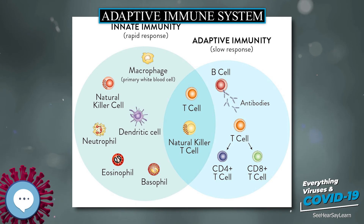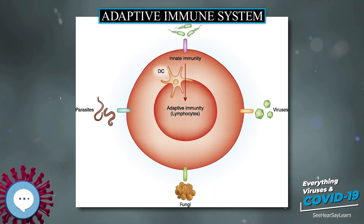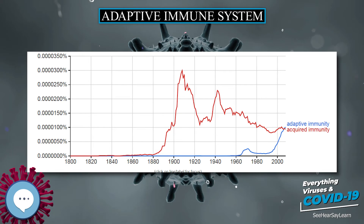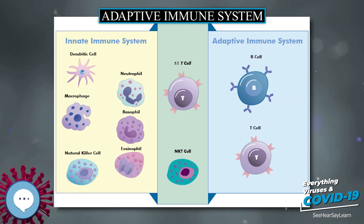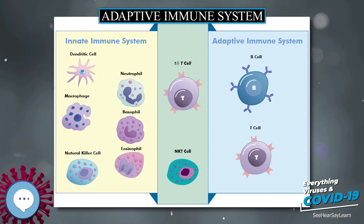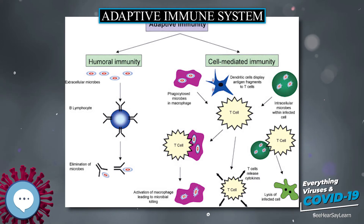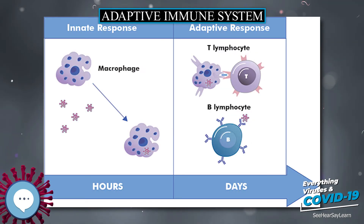These antibodies bind to antigens, making them easier targets for phagocytes, and trigger the complement cascade. About 10% of plasma cells survive to become long-lived antigen-specific memory B cells. Already primed to produce specific antibodies, these cells can be called upon to respond quickly if the same pathogen reinfects the host, while the host experiences few, if any, symptoms.